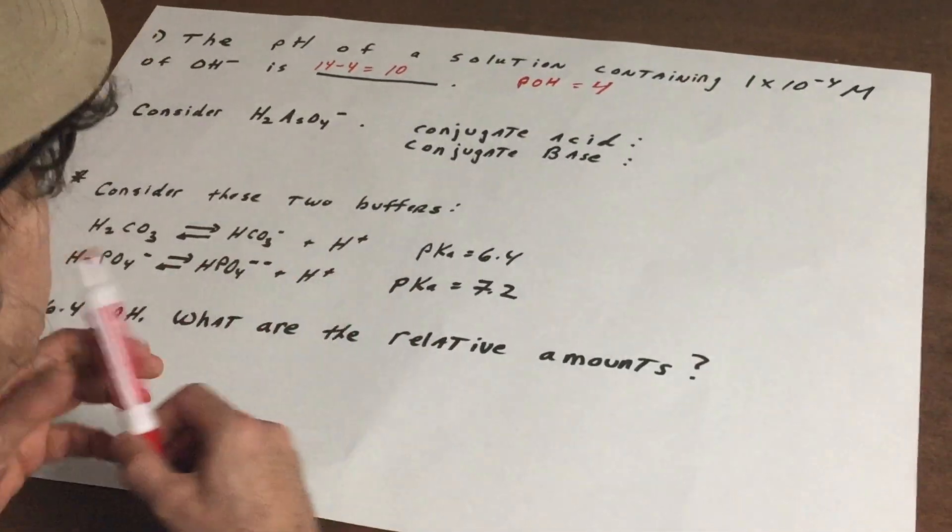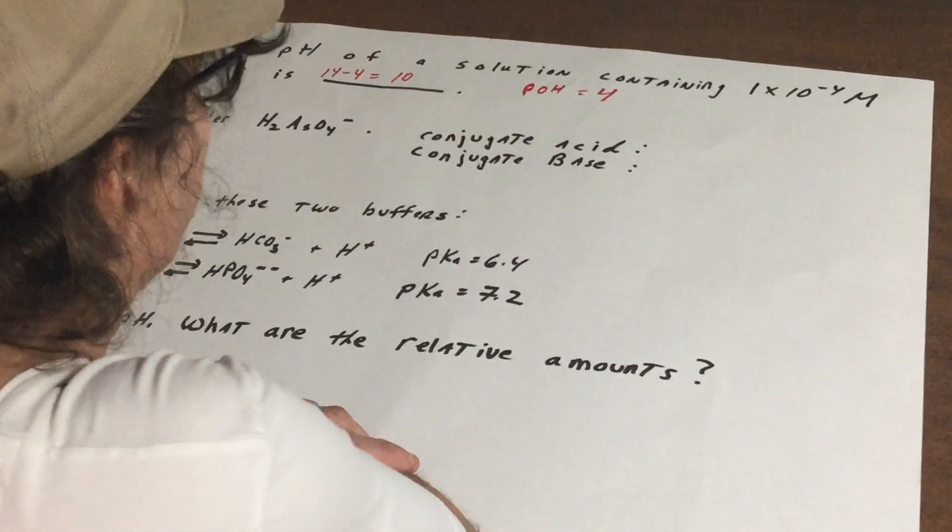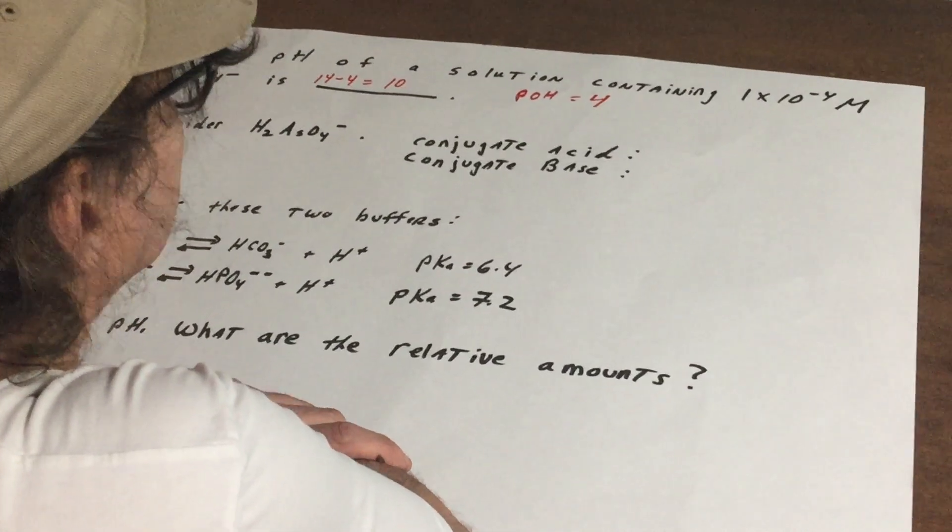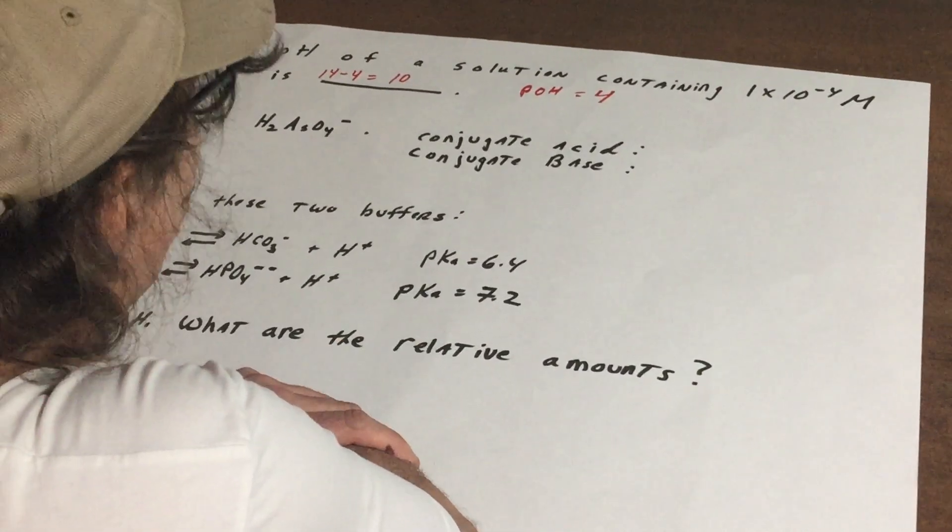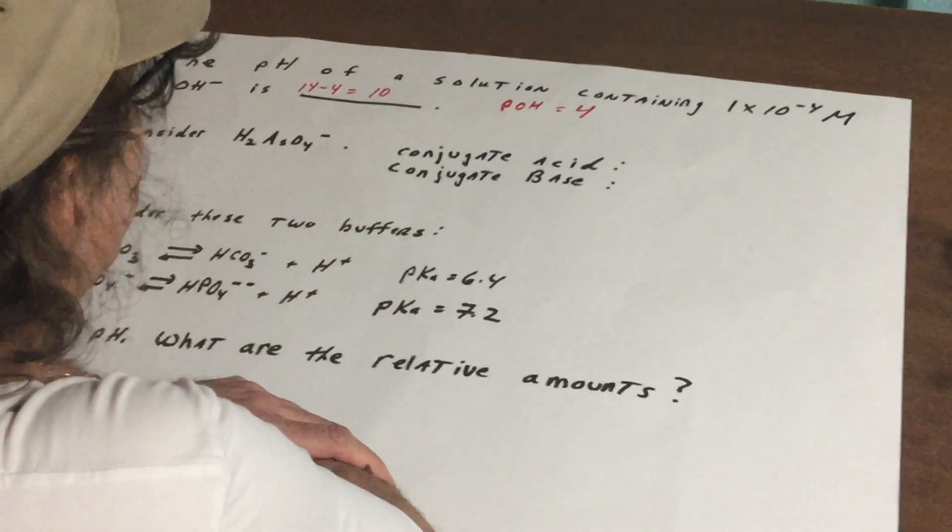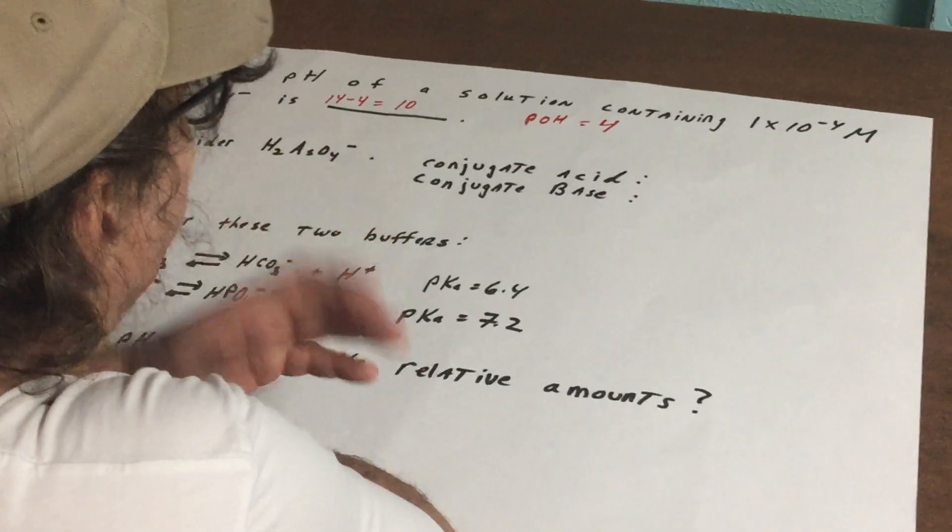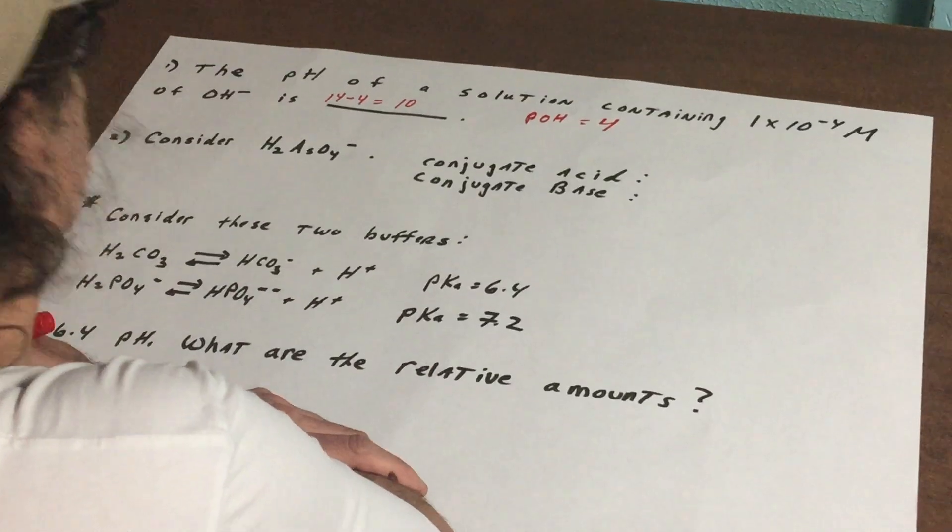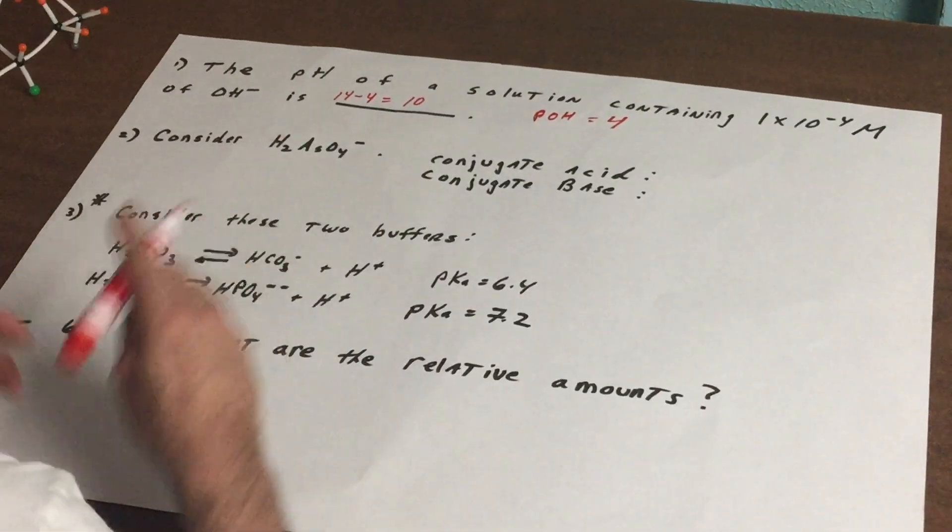So hopefully you can see if the concentration of hydroxide is 1×10^-4 molar, minus the log of that gives me my pOH, subtracted from 14 because pH and pOH collectively equal 14. That was an easy one.